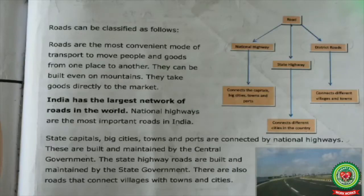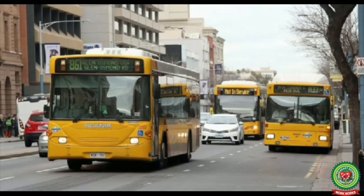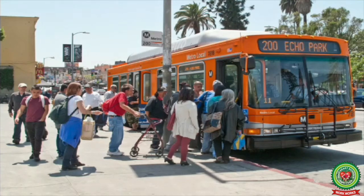Roads can be classified as follows. Roads are the most convenient mode of transport to move people and goods from one place to another. They can be built even on mountains and take goods directly to the market. Roads are the most useful mode of transport for people because they are cheap, provide doorstep service, and are widely accessible.